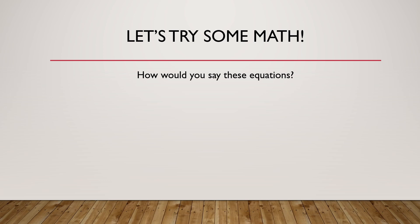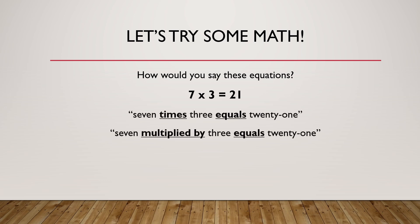How would you say these equations? Seven times three equals twenty-one, or seven multiplied by three equals twenty-one. Sixteen divided by eight equals two.